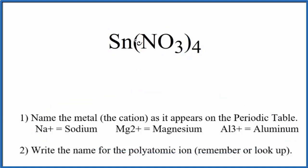We'll start by naming the Sn, this tin here. So we just write tin, and then we write the name for the polyatomic ion. This is the nitrate ion, lowercase n, and so far we have the name tin nitrate for Sn(NO3)4.